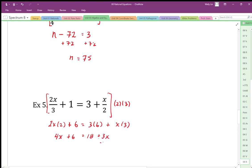I can just go minus 3x, minus 3x, minus 6, minus 6. So I end up with 1x is equal to 12, and there's my solution.